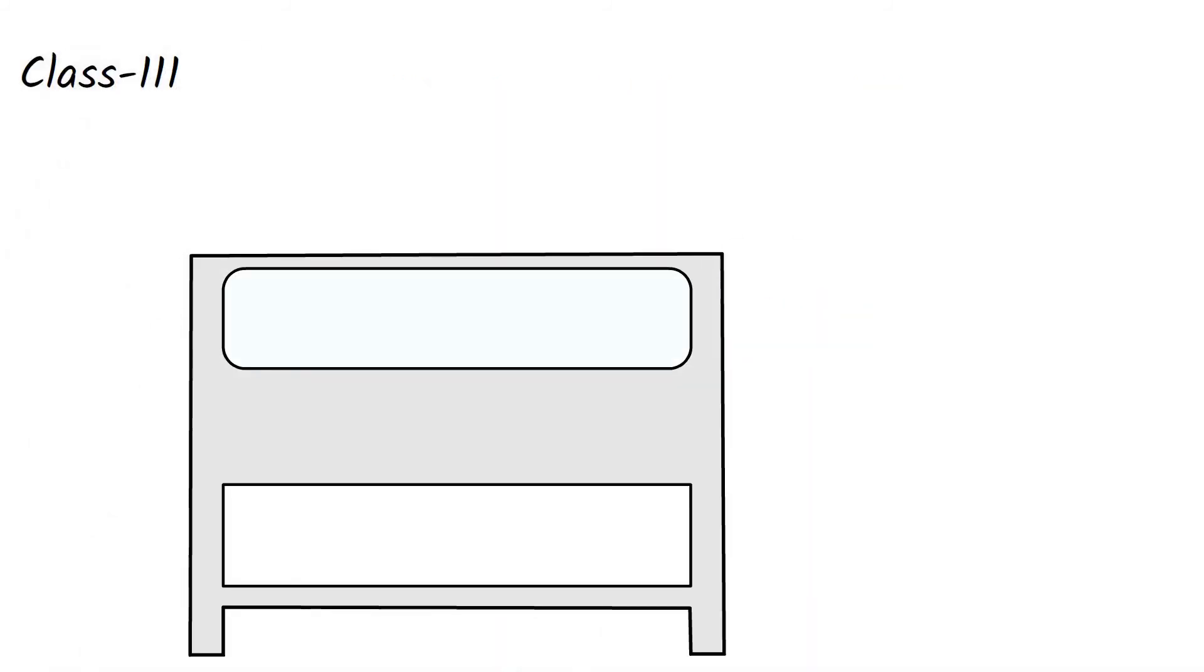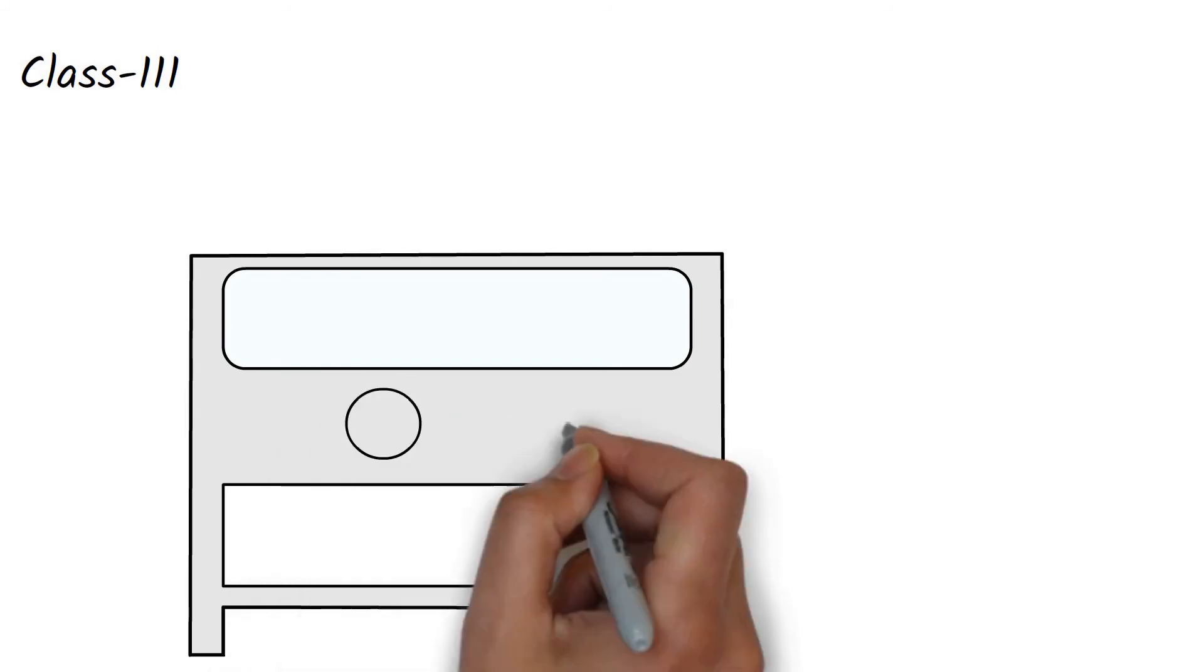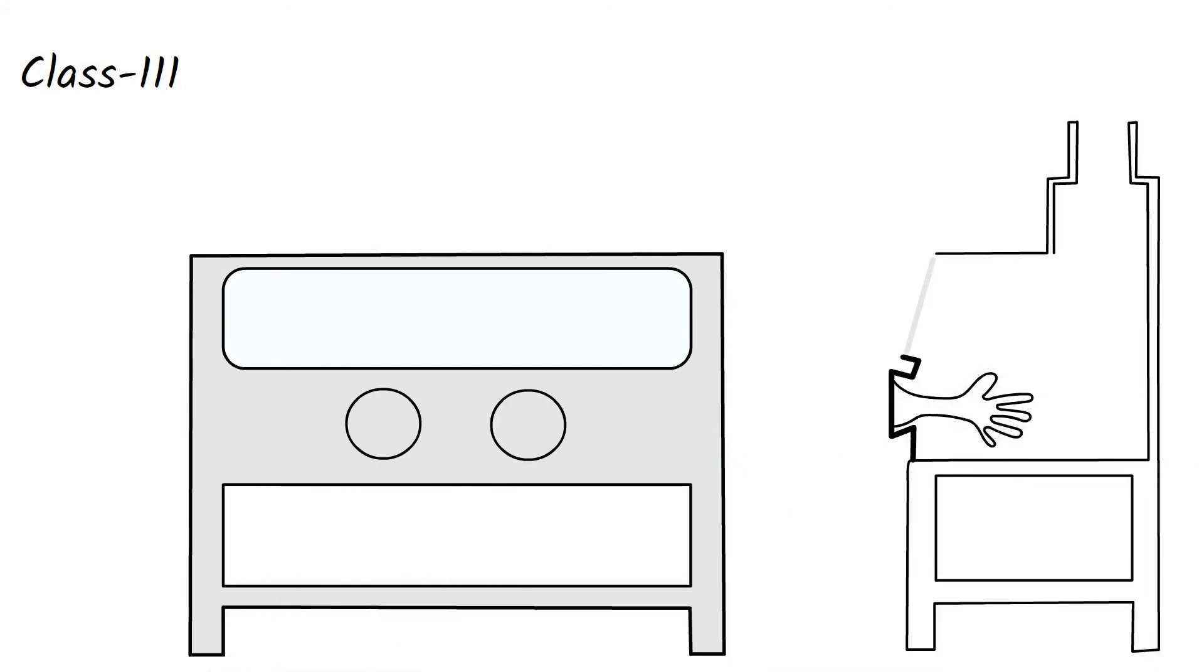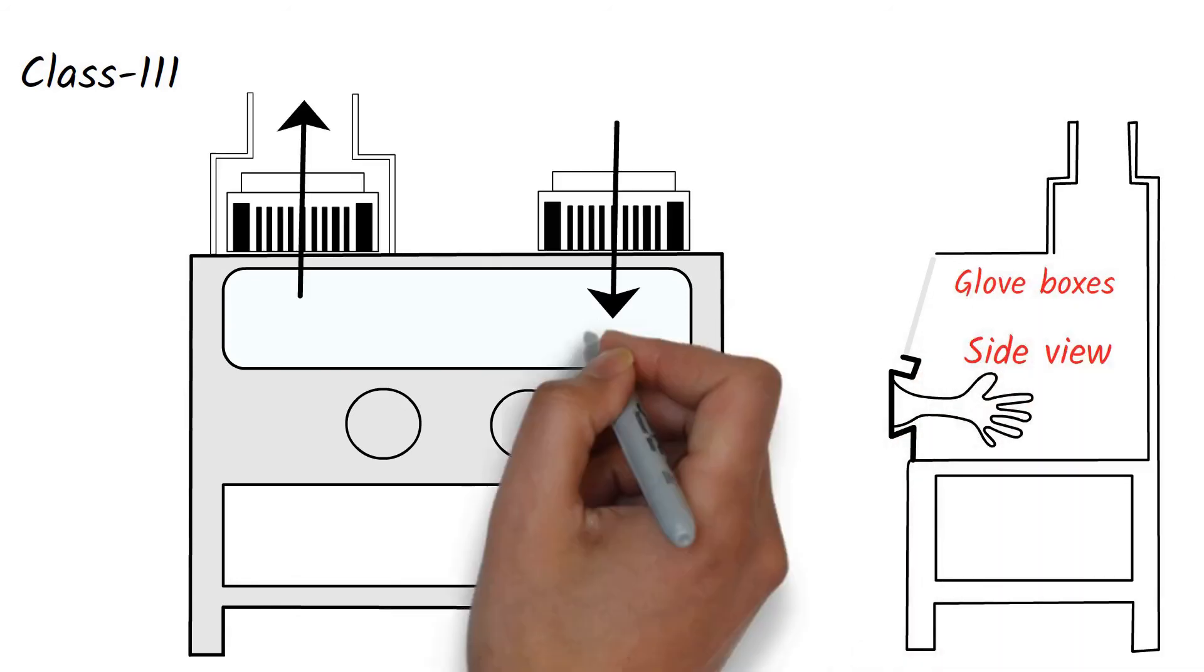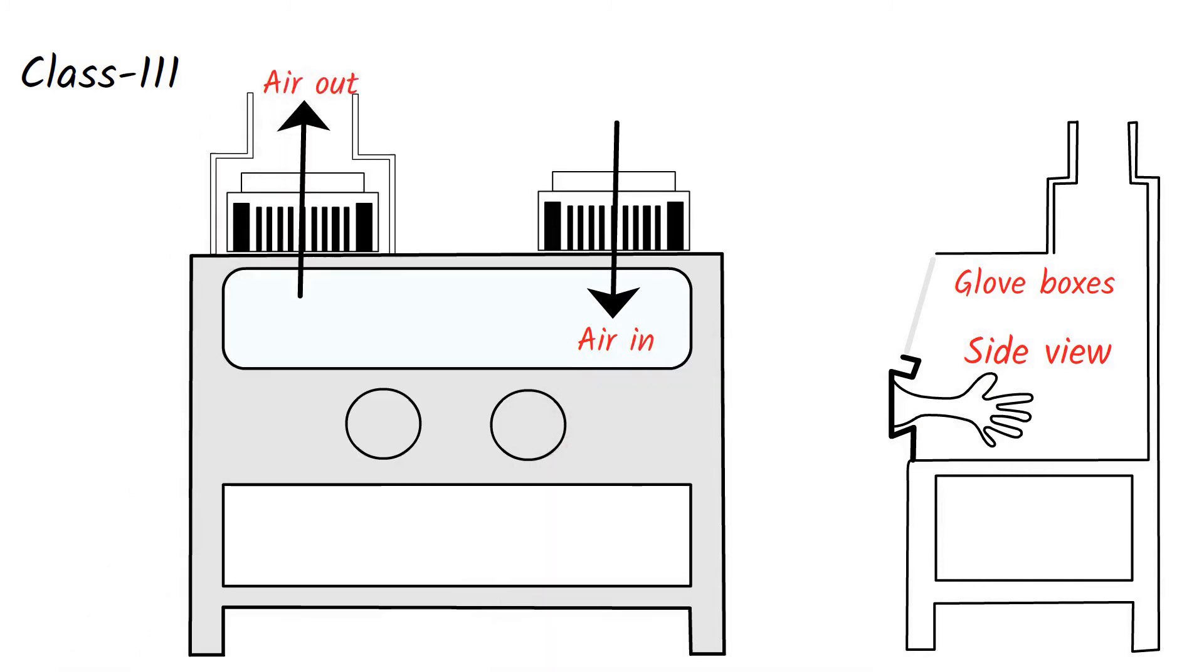The Class 3 biosafety cabinets are totally enclosed containers and provided with two gloves attached to the system to perform operations. Hence, these cabinets are also called glove boxes. The inflow and outflow of air occurs through HEPA filters. These cabinets are also equipped with a transfer cabinet that allows sterilization of material before they leave the glove box.